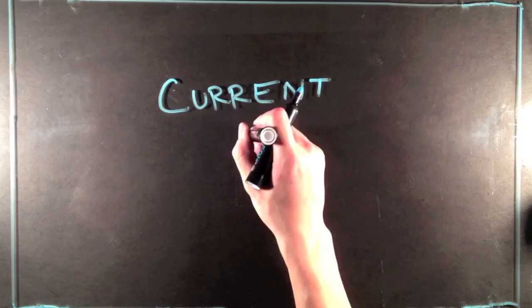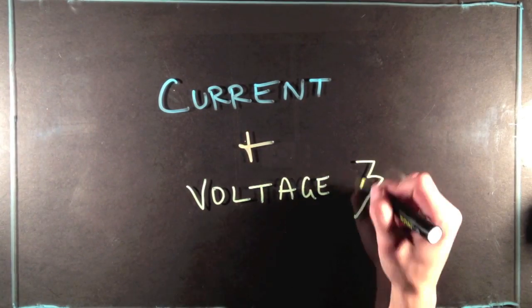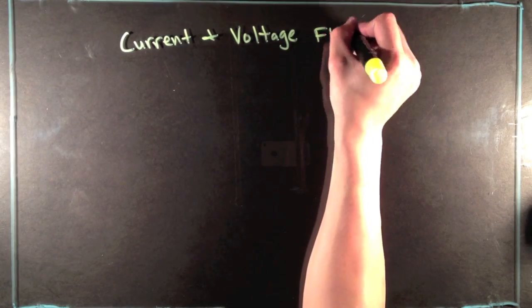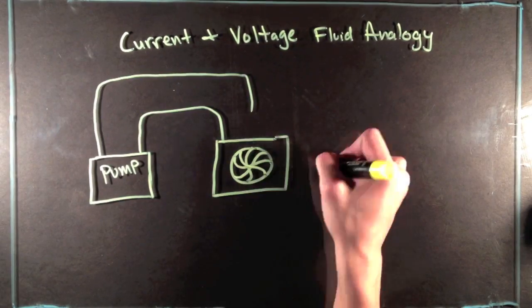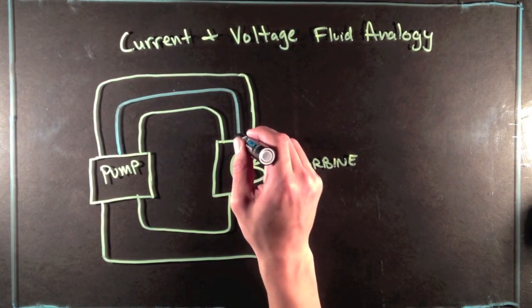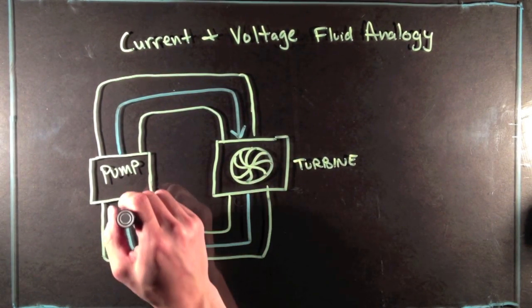So, now that we've talked about current a bit, let's move on to voltage and how the two relate to one another. So, to better understand current and voltage, let's take a look at another fluid analogy, where we have a pump and a turbine connected by pipes. The most important thing to remember is that the rate of the water flowing out of the pump is the same as the rate of the water flowing into the pump.